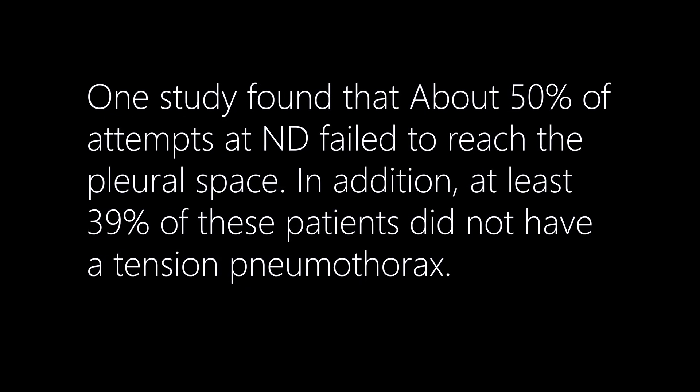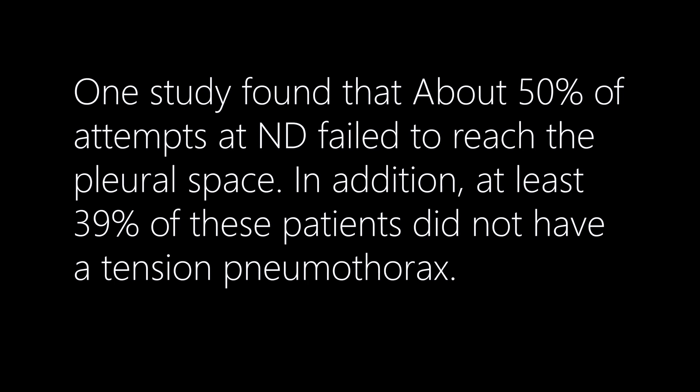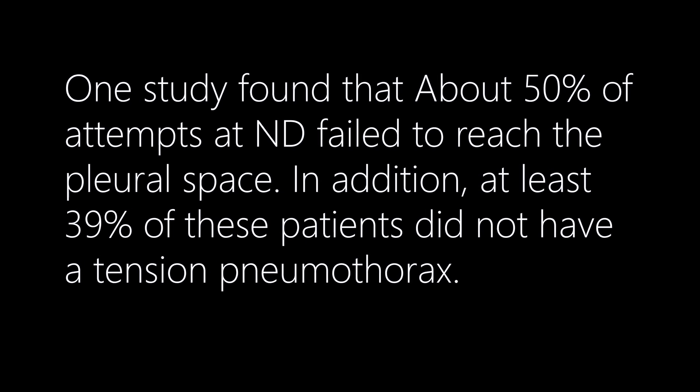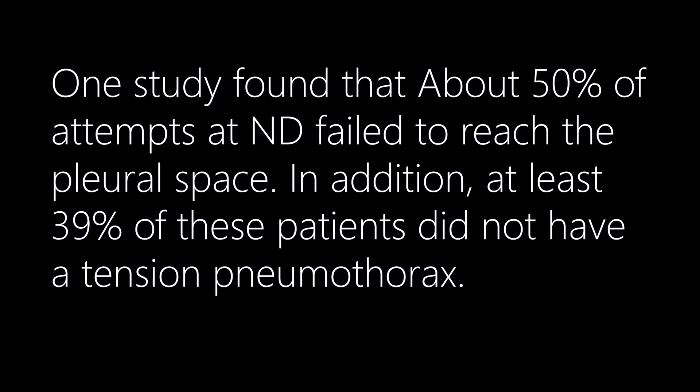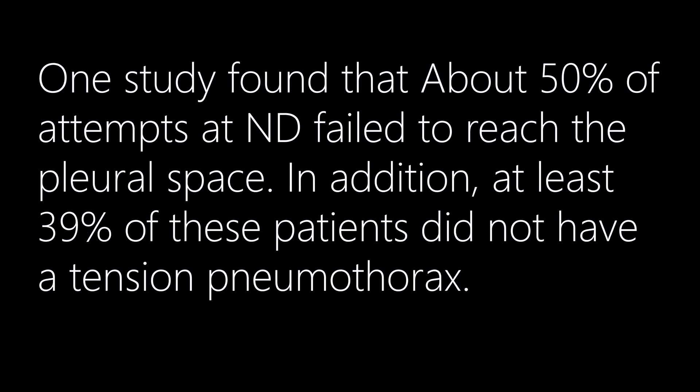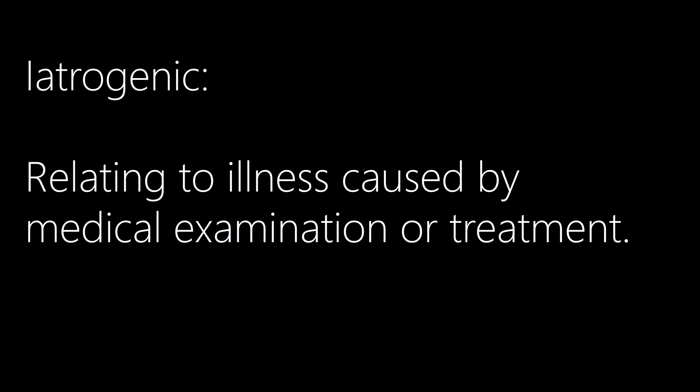The anterior approach may fail in many patients as well. Longer 10-gauge needles may increase the chance of decompression but carry a high risk of damage to surrounding vital structures. About 50% of attempts at needle decompression fail to reach the pleural space. In addition, at least 39% of these patients did not actually have a tension pneumothorax, making the procedure unnecessary. Using an 8-centimeter catheter at the 5th intercostal space also has an increased chance of iatrogenic cardiac injury.